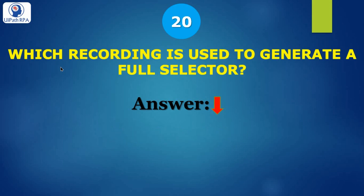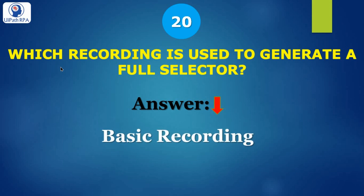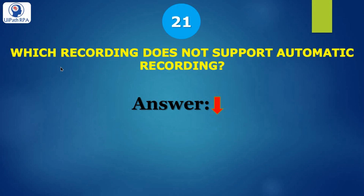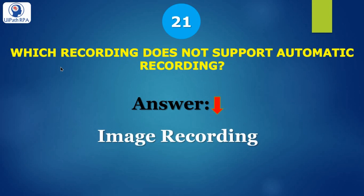Question 20: which recording is used to generate a full selector? Basic recording is used to generate a full selector. Question 21: which recording doesn't support automatic recording? We have Image recording, which does not support automatic recording — it supports only manual recording.